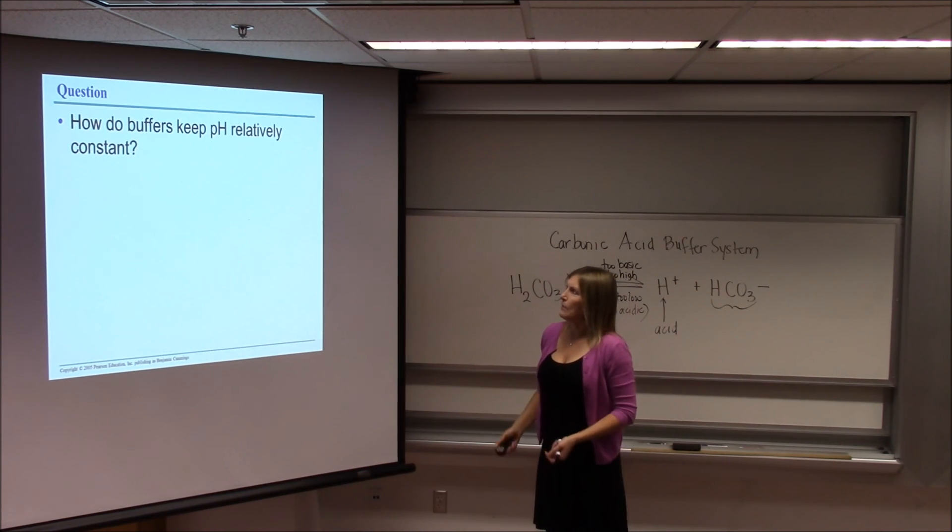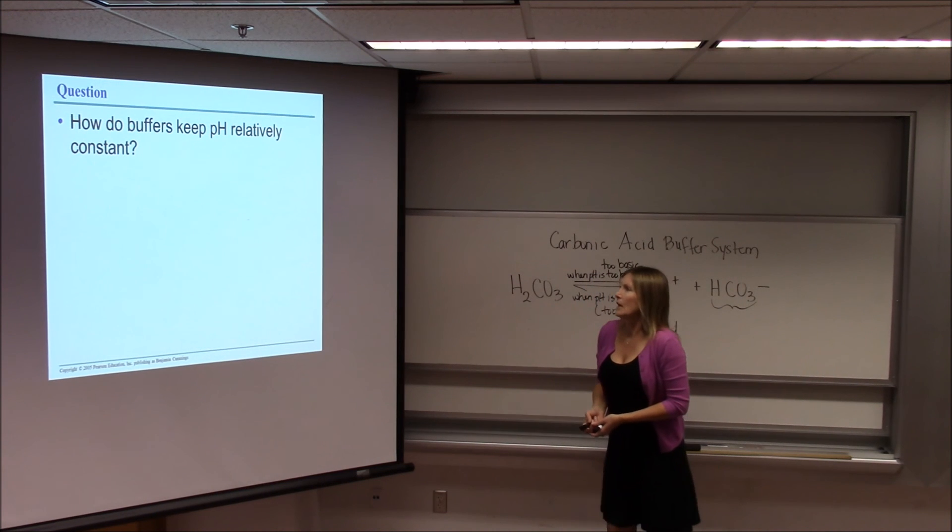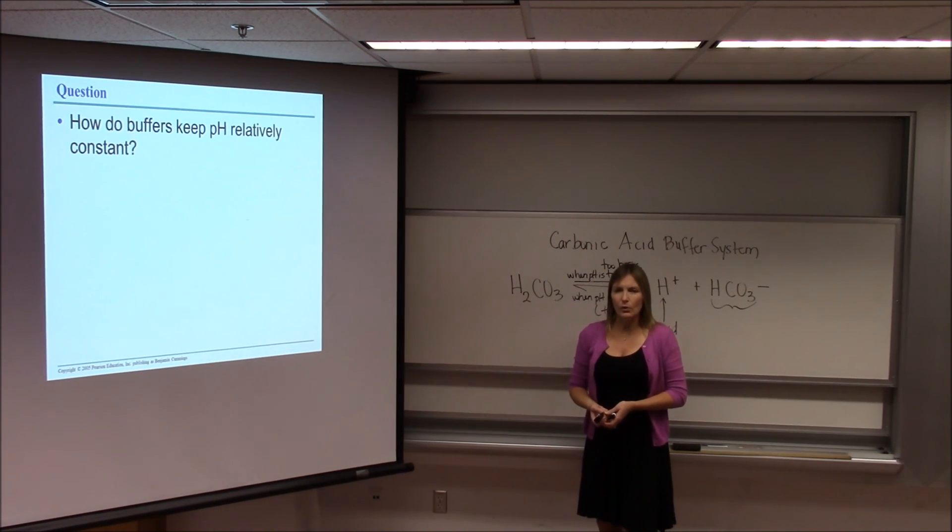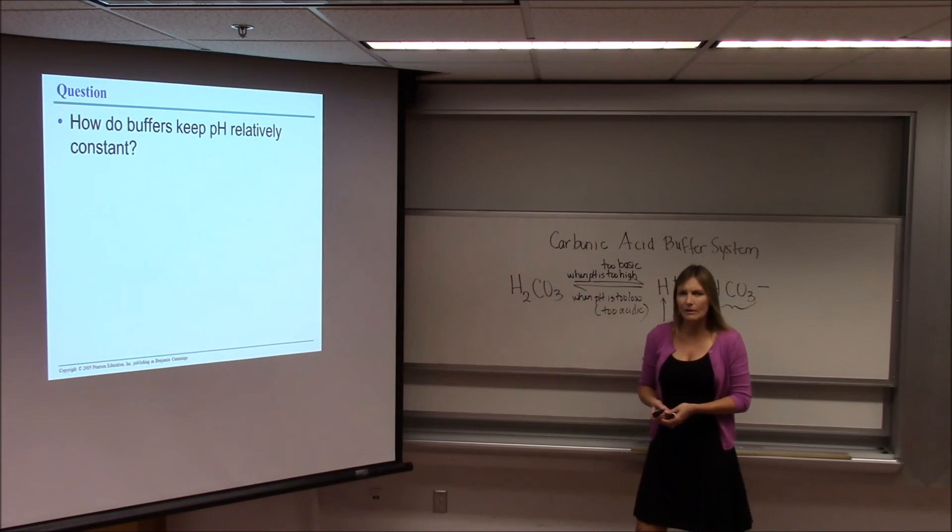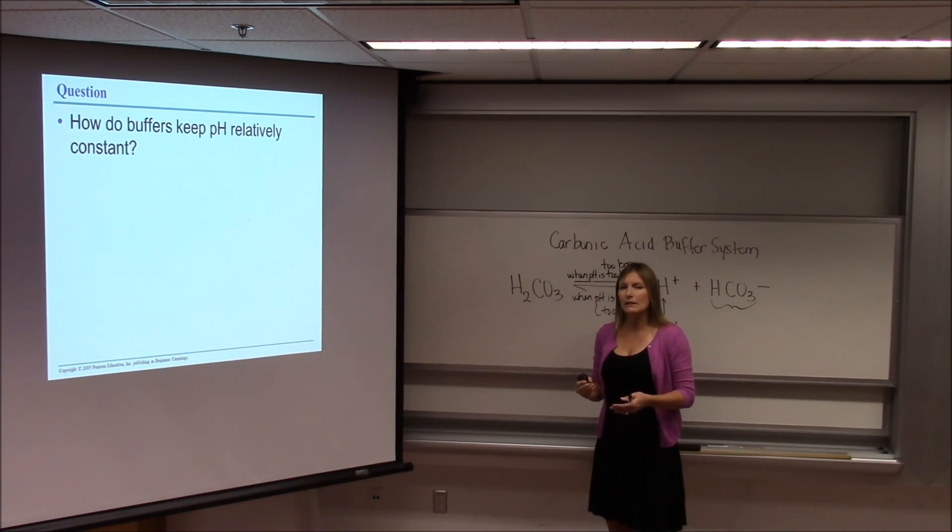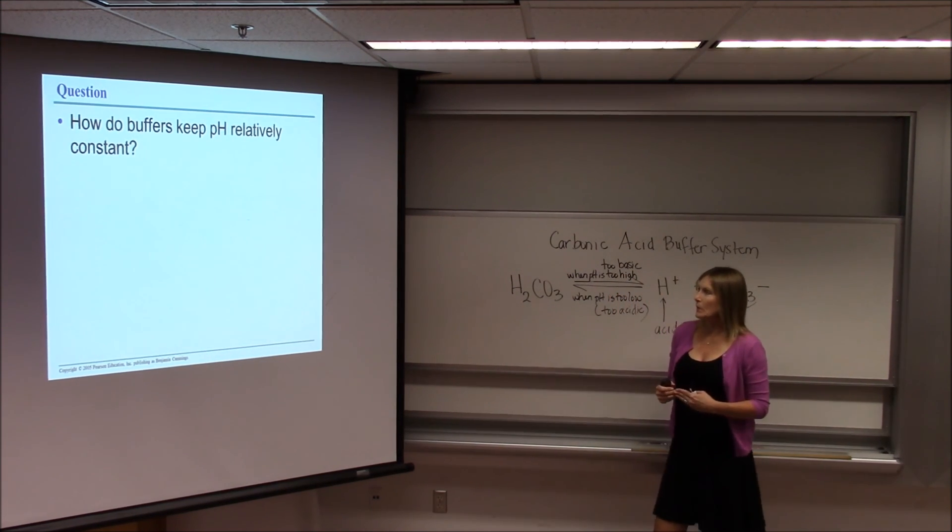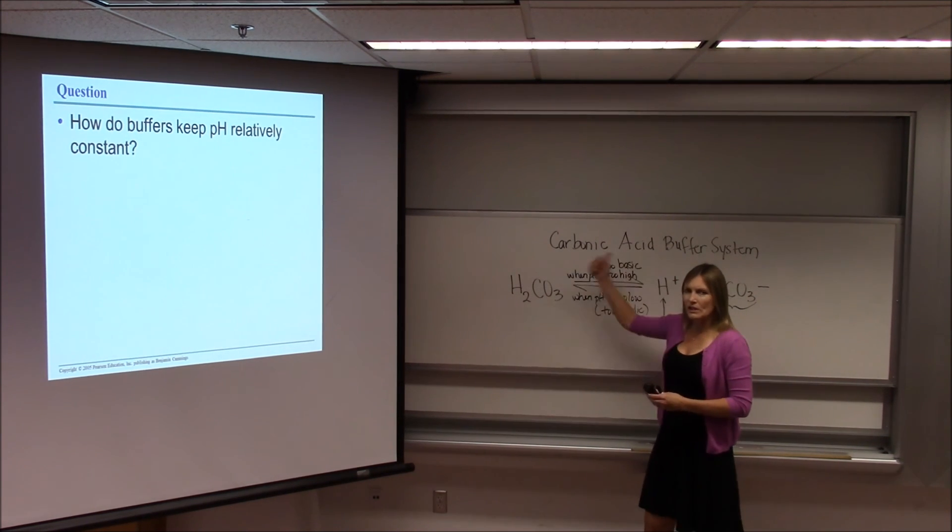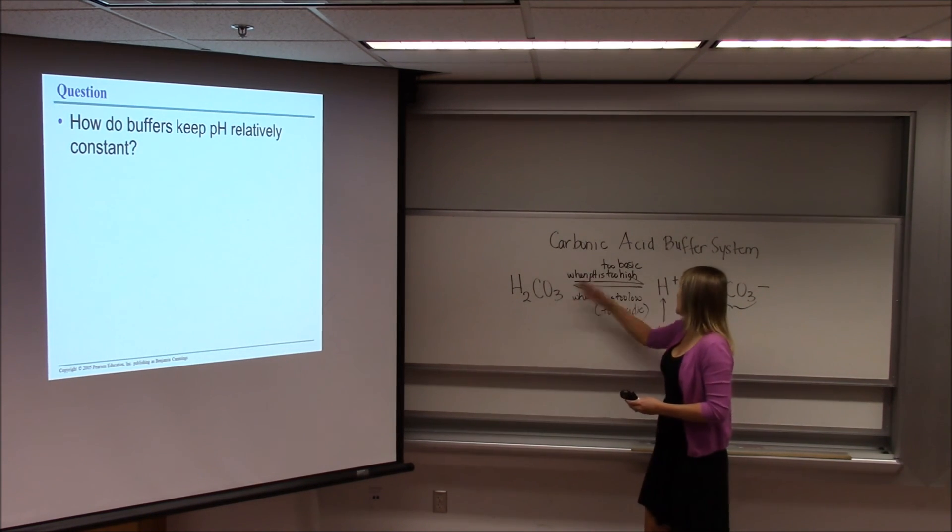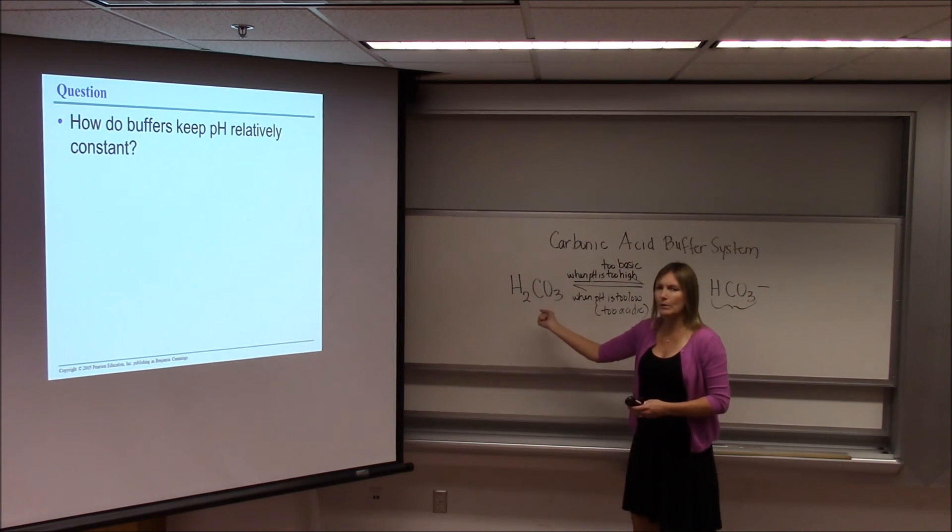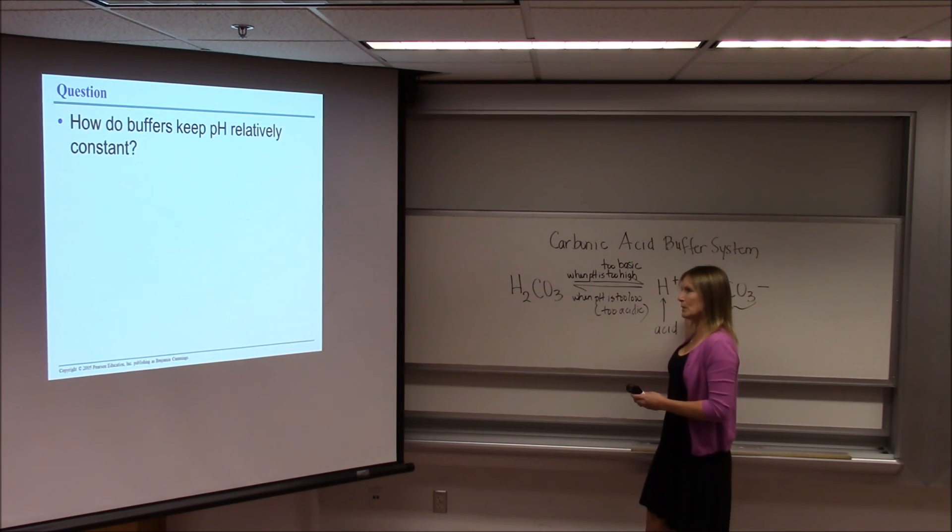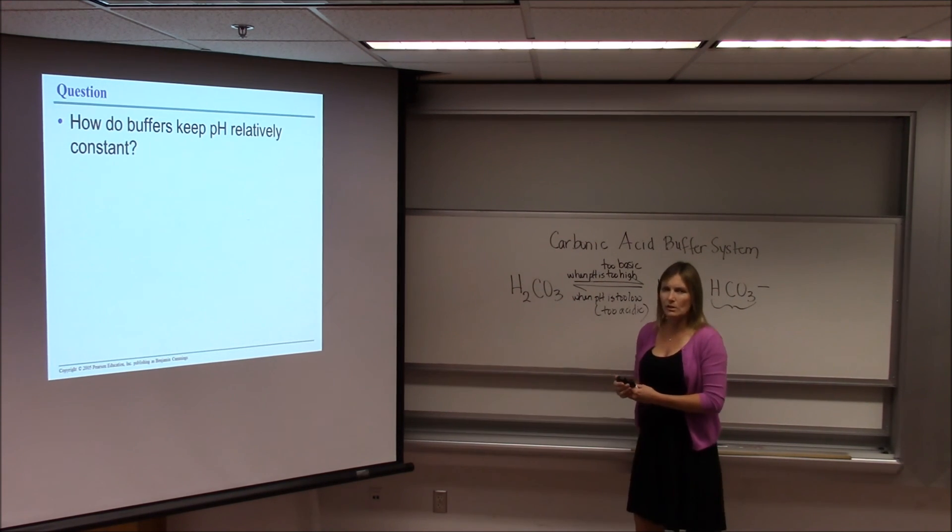How do buffers keep pH relatively constant? In fact, if your blood gets to pH 7, that's way too acidic. We want it to stay normal, whatever normal is for that environment. So how do buffers keep pH relatively constant? By being able to shift in one direction or the other to either release hydrogen ions or tie them up. Releasing them to make it more acidic when the pH gets too high. Tying them up when the pH gets too low.